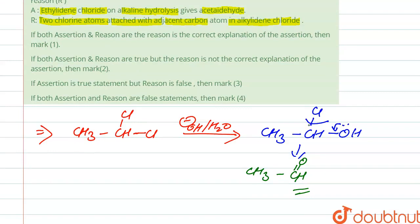Because here acetaldehyde is formed, so it is correct. And reason says that two chlorine atoms are attached with adjacent carbon in alkylidene chloride, but here we see that two chlorine atoms attach at the same carbon, not adjacent carbon. So this reason is false. So our correct option is option C. Thank you.